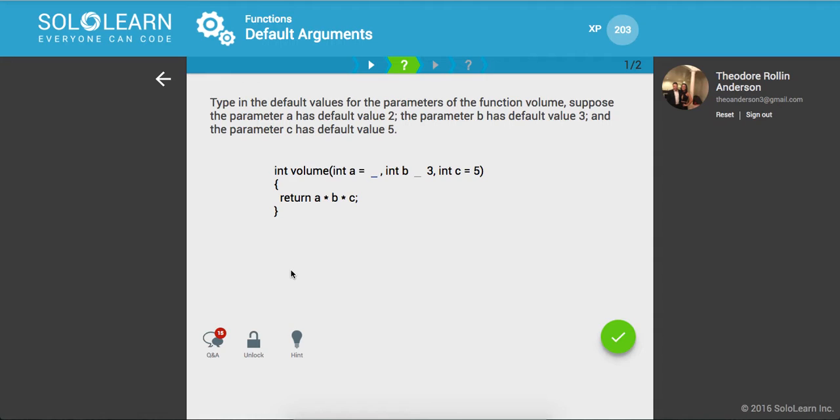So type in the default value for the parameters of the function volume. Suppose the parameter A has default value 2, the parameter B has a default value 3 and the parameter C has a default value of 5. So A equals 2, B equals 3 and C equals 5. Awesome.